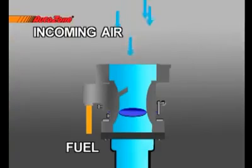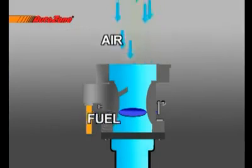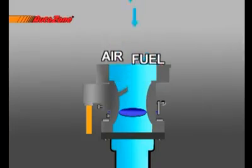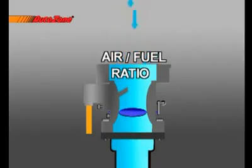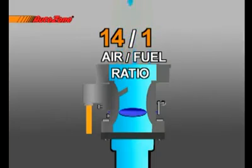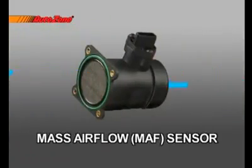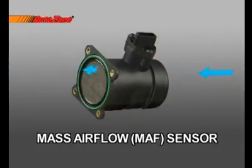In addition to the temperature of the air entering the engine, the computer also needs to know how much air is getting to the engine. To operate efficiently, an engine must have the correct air-fuel ratio, which is typically 14 parts air to one part fuel. The mass airflow sensor reports the amount of air entering the engine, and the computer adjusts the amount of fuel accordingly.